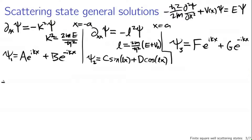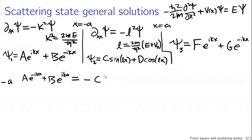Our continuity boundary condition at x equals minus a gives us: A·e^(-ika) plus B·e^(ika) equals minus C·sin(la) plus D·cos(la). When substituting minus a for x in the sine term, since sine is an odd function, I pull the minus sign out front and write it as minus C times sin(la), keeping the arguments of all trig functions consistent.